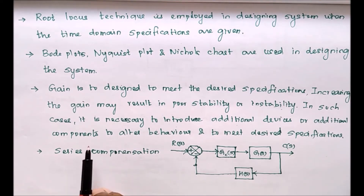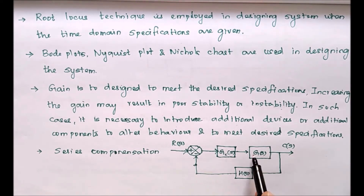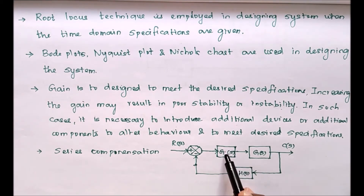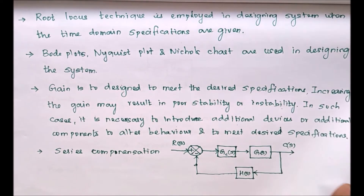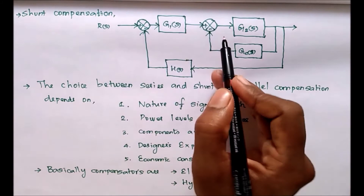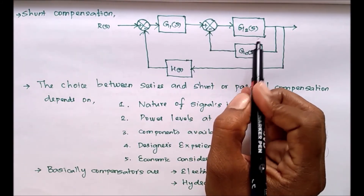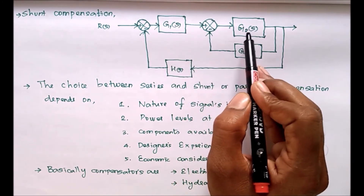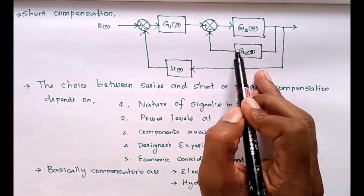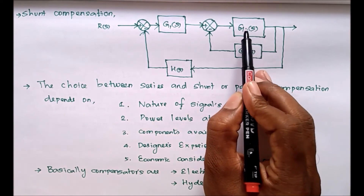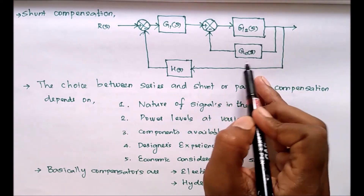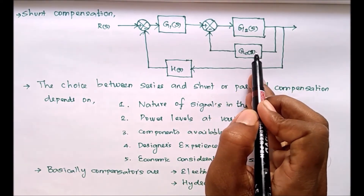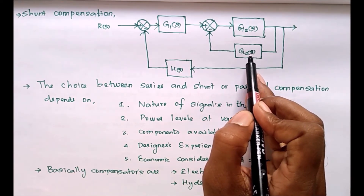A compensator may be series or parallel. If a component or device is added in series with the open loop system, it is called series compensation. If a component's gain is placed in parallel with G2(s), that is called shunt compensation or parallel compensation.